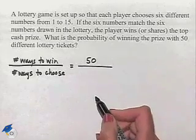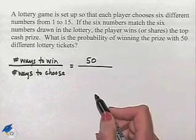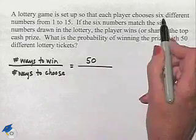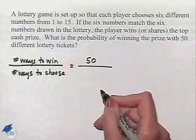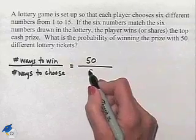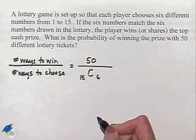To determine the number of ways to choose, we have to look back at the criteria for the game. That is, we have to choose six different numbers from 1 to 15. The order in which we choose the numbers does not matter, so it's going to be a combination of 15 taken six at a time.